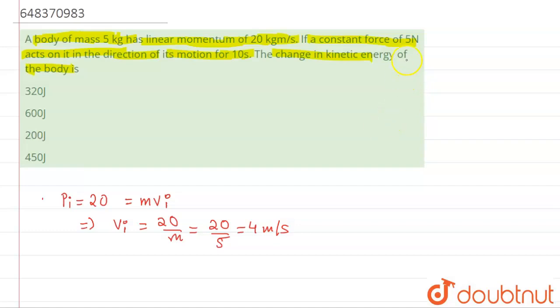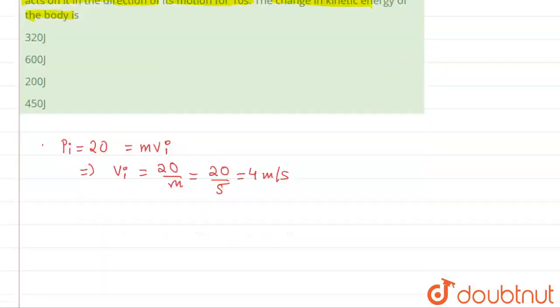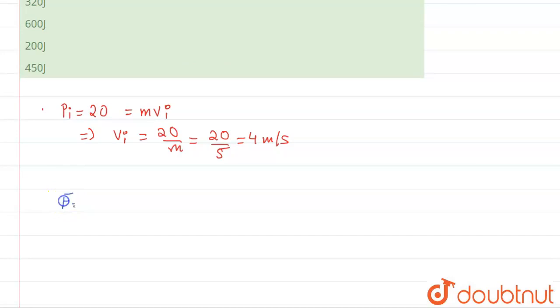We found out initial velocity. Now if you see, force is given, so we can find out acceleration. Force is basically equal to 5 newtons, and this is also given by mass into acceleration from Newton's second law of motion. So we can write acceleration is equal to 5 by mass, this will be equal to 5 by 5, which will be equal to 1 meter per second square.